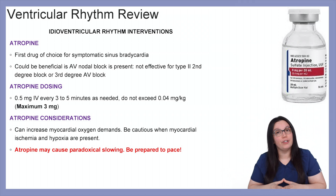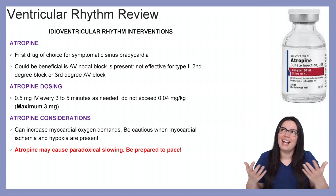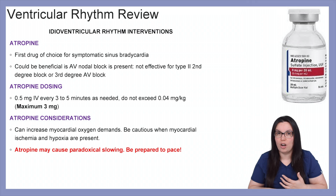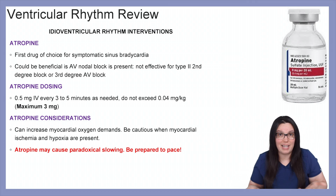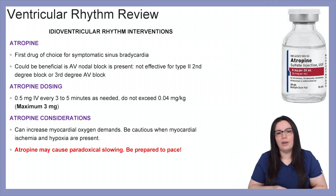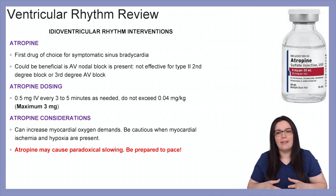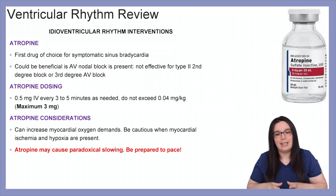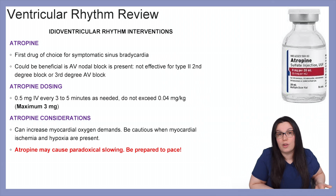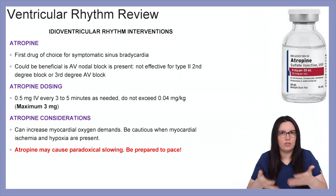Atropine is our first drug of choice for symptomatic sinus bradycardias. It can also be used in our AV nodal blocks; however, there really hasn't been shown any benefit for our second degree type 2 heart blocks or third degree complete heart blocks — you may still see it but it just might not show benefit. Atropine dosing: 0.5 milligrams IV every three to five minutes, not to exceed 0.04 milligrams per kilogram with a maximum of three milligrams. Considerations: it can increase myocardial oxygen demand so we have to be cautious if there is myocardial ischemia or hypoxia present. Lastly, atropine can cause paradoxical slowing — sometimes instead of bringing the heart rate up it can actually slow it down further — so we need to prepare to pace these patients in case that occurs.